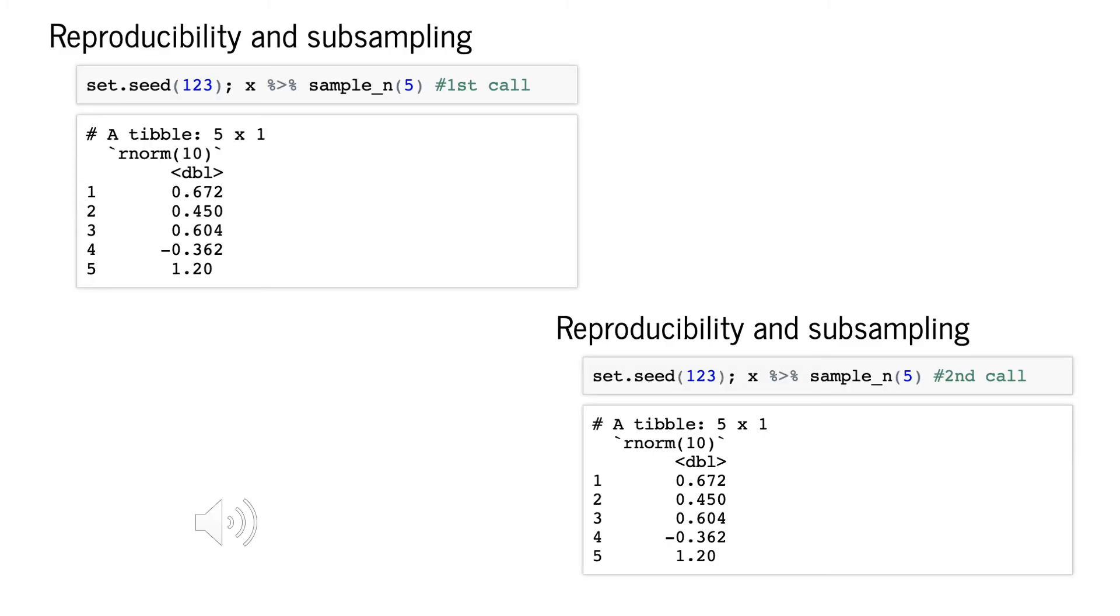The issue lies in the fact that R uses a random number generator, so that it draws a different 5 numbers each time.